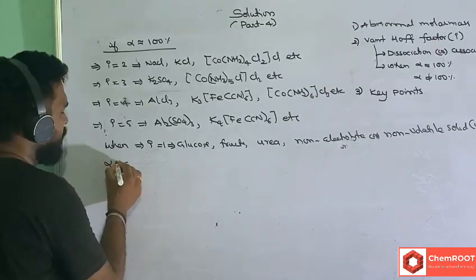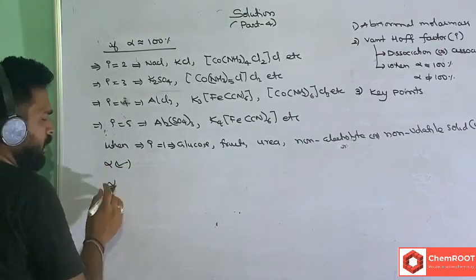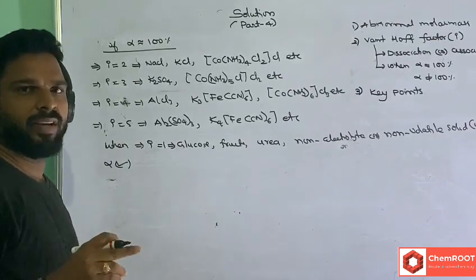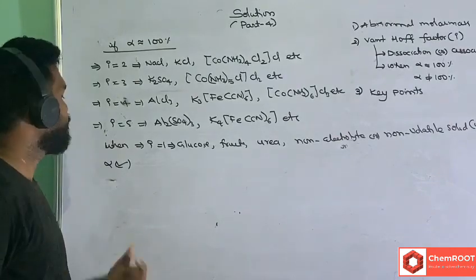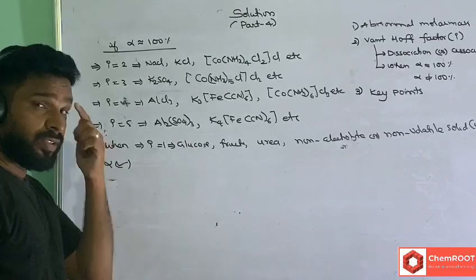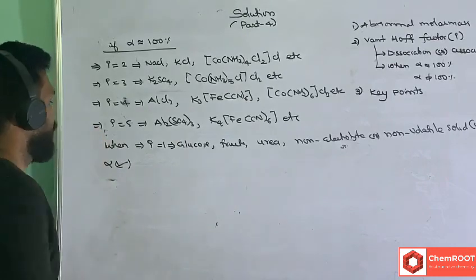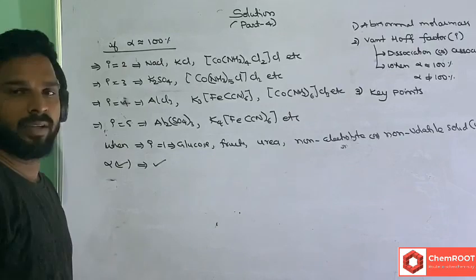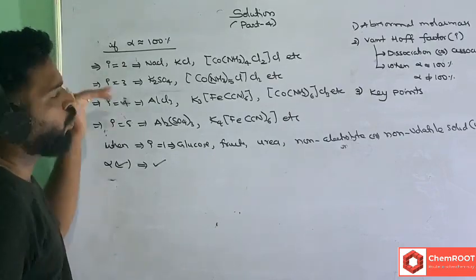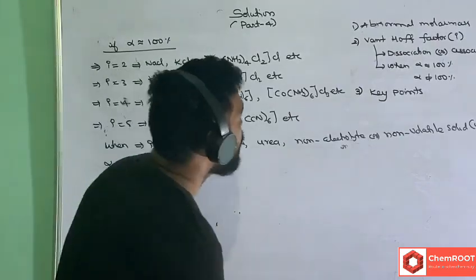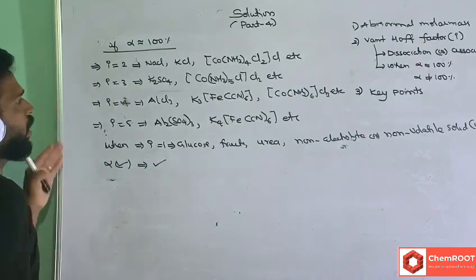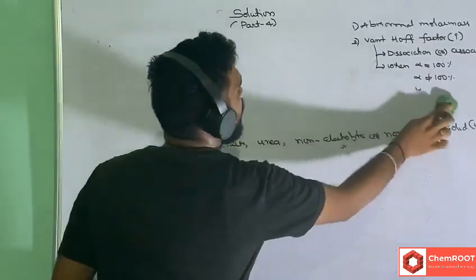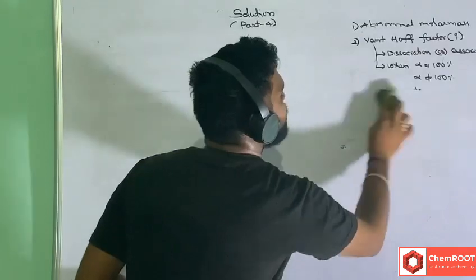If alpha is given, then follow the previously discussed formula: for dissociation, alpha = (i − 1) / (n − 1); for association, alpha = (i − 1) / (1/n − 1). That is the way to find the Van't Hoff factor.